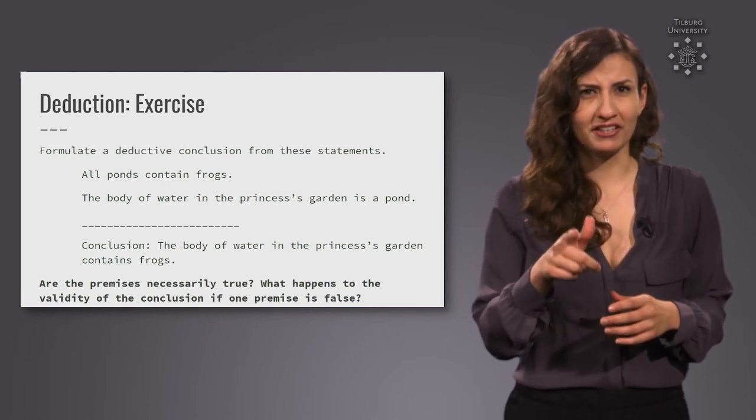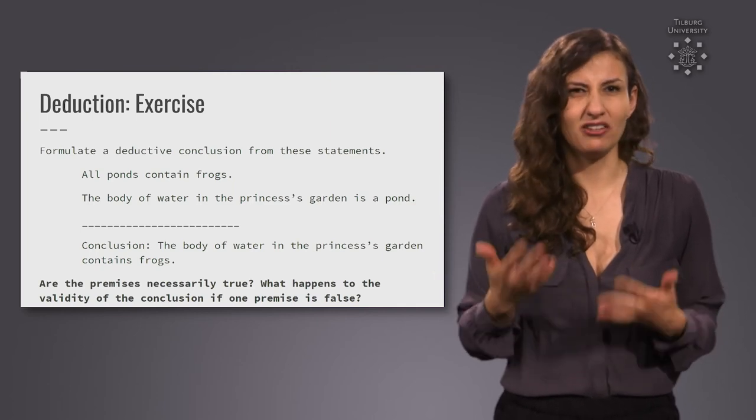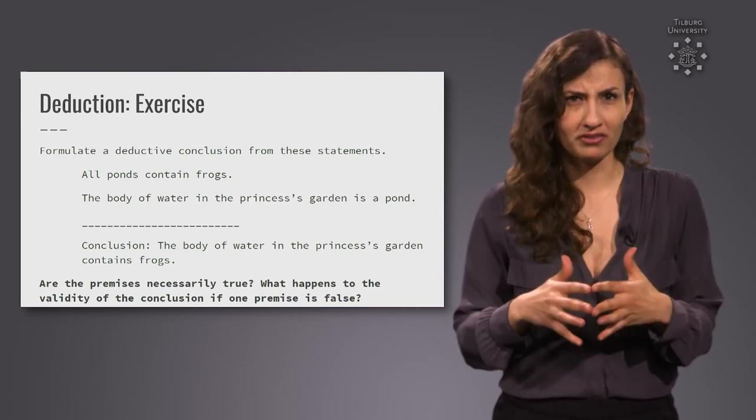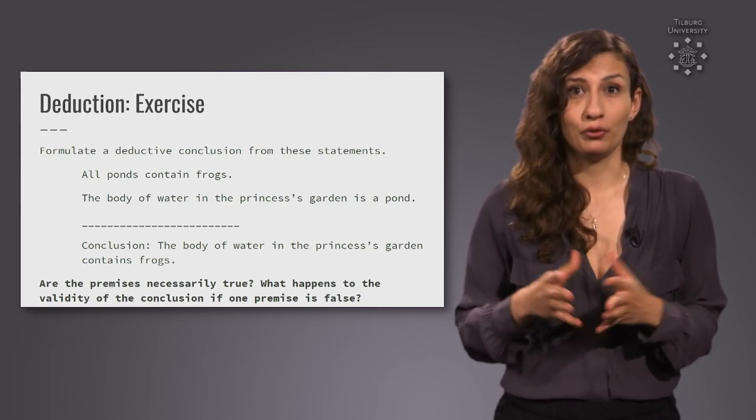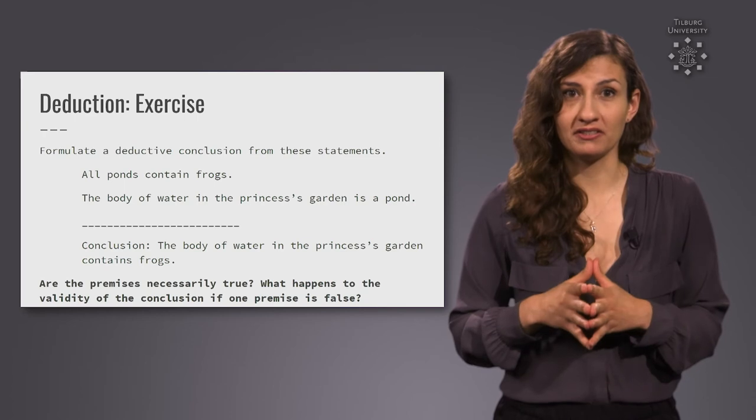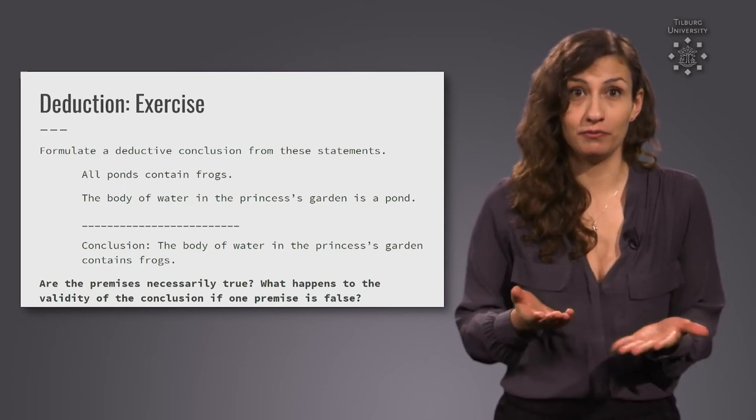However, do you think these premises are necessarily true? Is it necessarily true that all ponds contain frogs? There might be reasons why there are no frogs in certain ponds. For instance, because the pond was polluted with a substance that makes it impossible for frogs to live there.